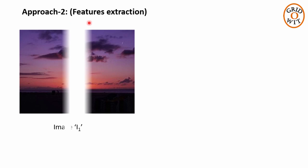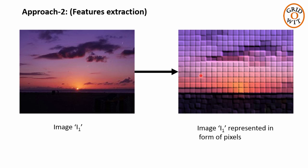Now let's see approach 2 in which we will try to reduce the number of features. Actually we are doing the same thing as discussed in generic multimedia object indexing approach. As seen earlier image can be represented in the form of pixels.